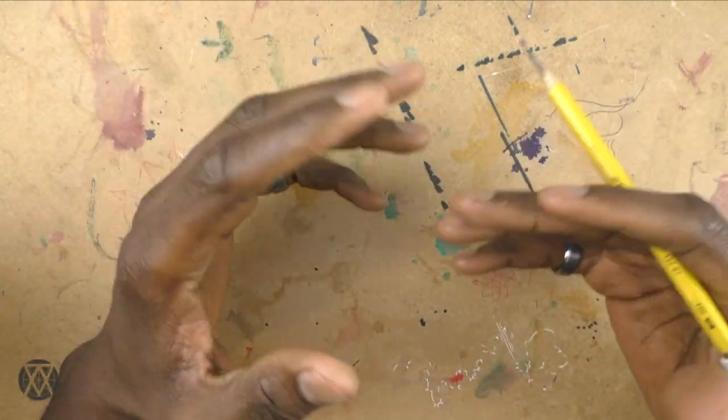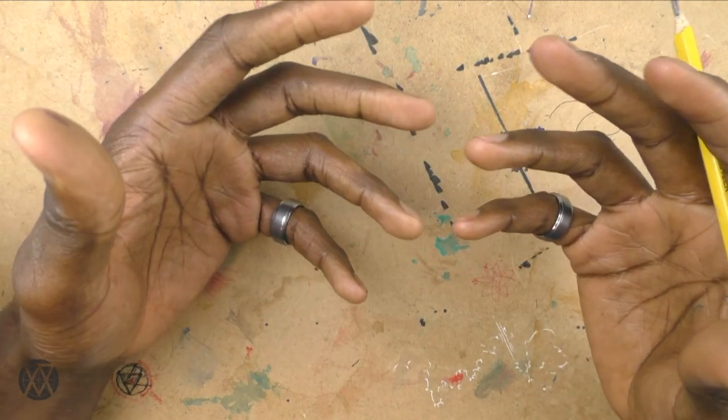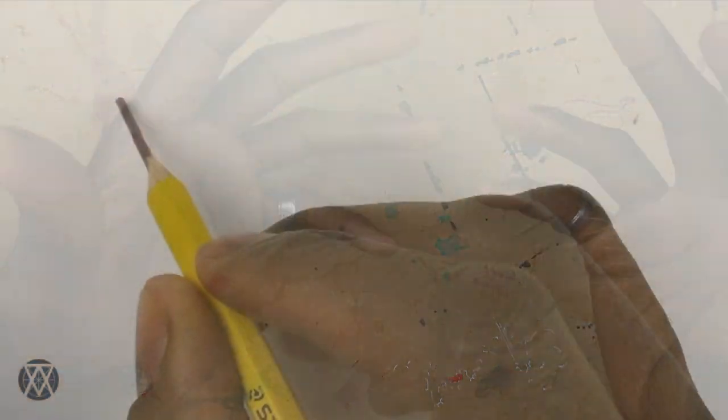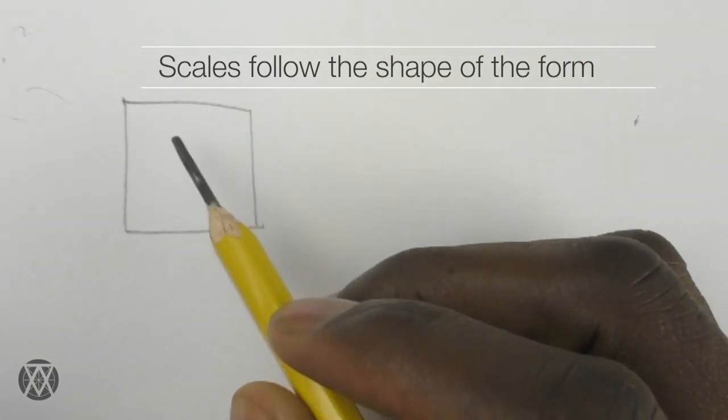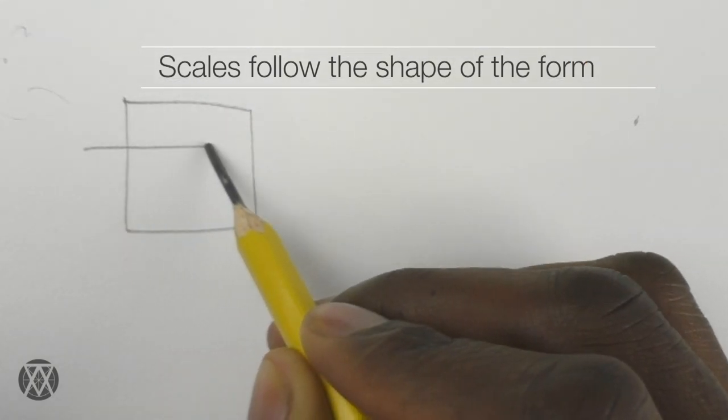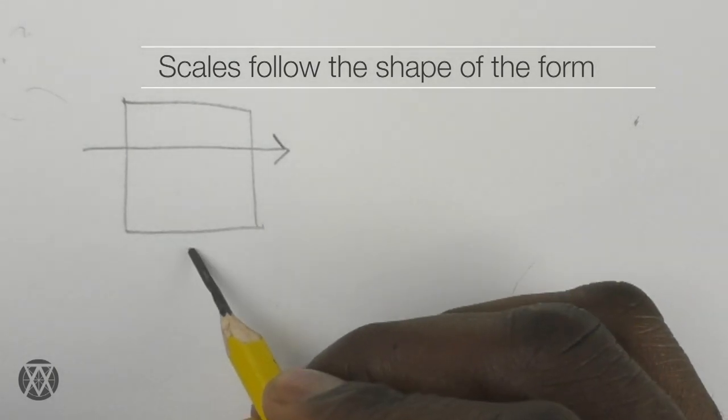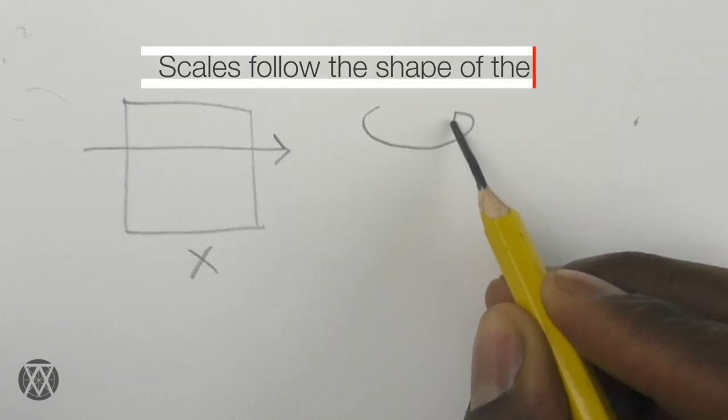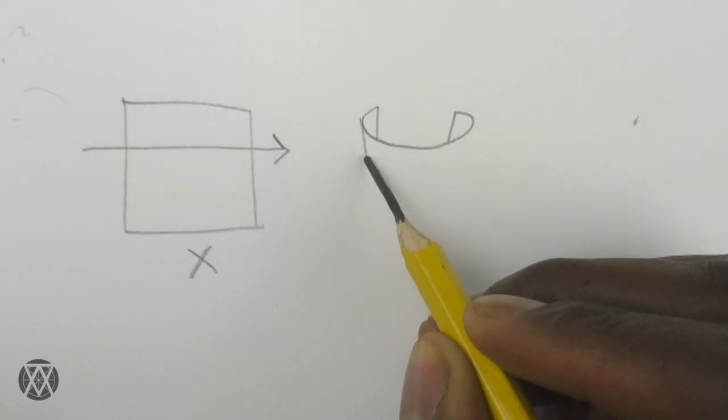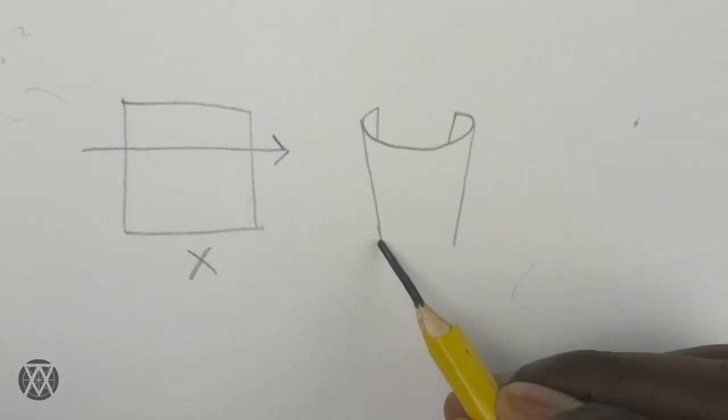A common mistake I generally see people make when drawing scales or textures in general is that they forget the texture is supposed to follow the cross contour of the form that they cover. As I generally say, textures are not flat patterns. Whether you're drawing scales that cover legs, tail, or the body, we must envision the form they are wrapping around.